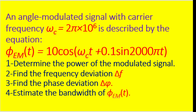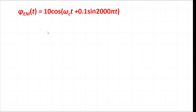The question is asking us to determine four quantities: the power of the modulated signal, find the frequency deviation, find the phase deviation, and estimate the bandwidth of this angle modulated signal.